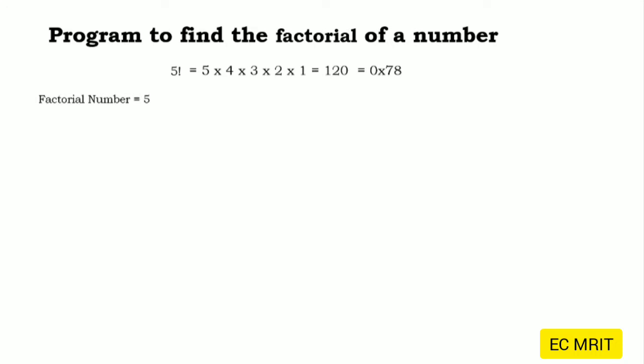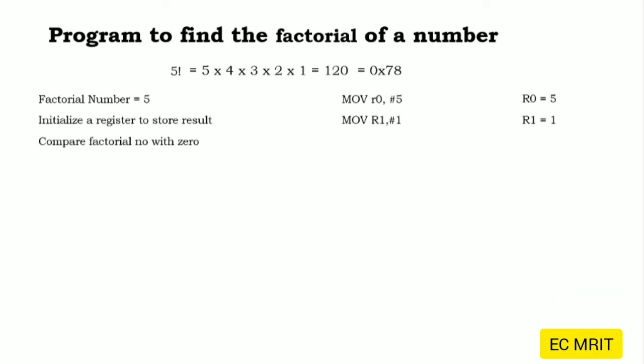We will use R0 to save our number whose factorial we want to find, so R0 will be 5. Next we will initialize the result register where we will save the result. We will use R1 as our result register, and we will initialize R1 with the value 1.